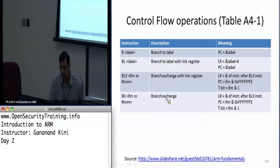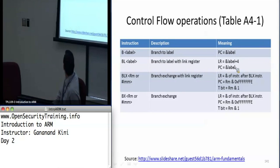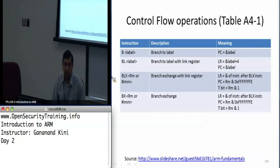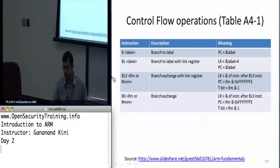This is because of the whole pipelining occurring. Because of the pipeline, you have to address 4 ahead — and I'm assuming we're in thumb mode here. So when this branch with link occurs, you're assigning the link register with the address of the label plus 4, so when it returns, it's going to return two instructions ahead, essentially.